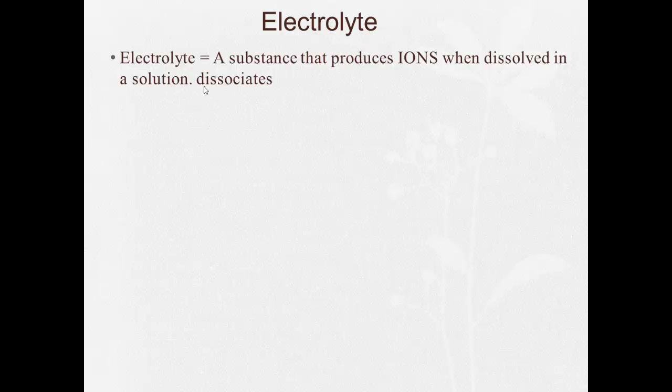So before we really get into colligative properties, we have to define a term, electrolyte. And an electrolyte is a substance that produces ions when dissolved in a solution. It dissociates.